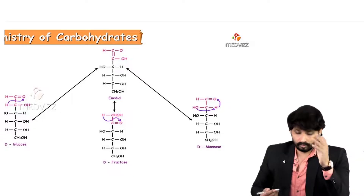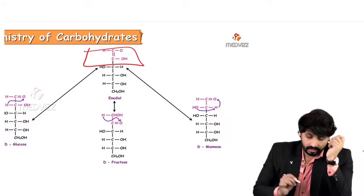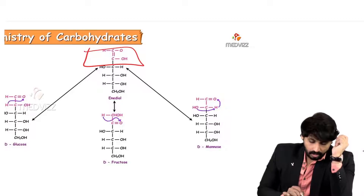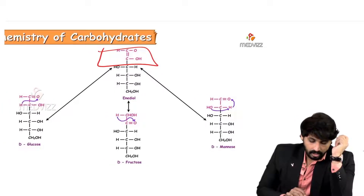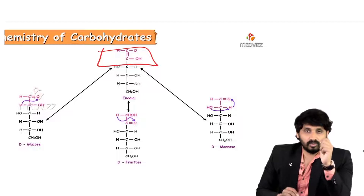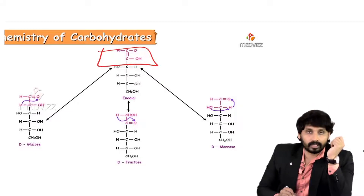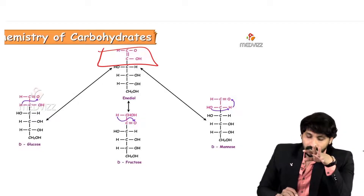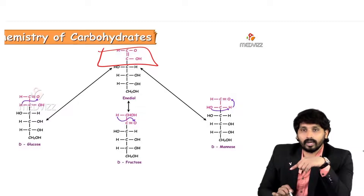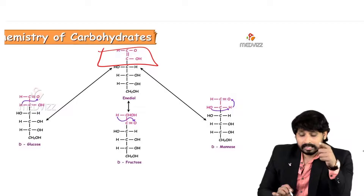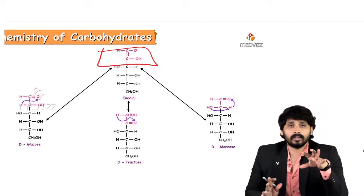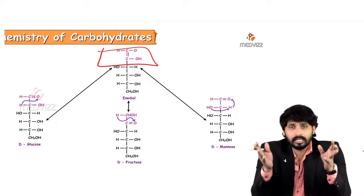Enediol carries strong reducing properties. Hydrogen is transferred from glucose to the first carbon, forming enediol and creating a double bond between C1 and C2. This enediol can accept one more hydrogen to form fructose, or transfer hydrogen from the second carbon to form mannose. All these are interconvertible sugars — this interconversion of sugars in the presence of alkali is known as tautomerization.